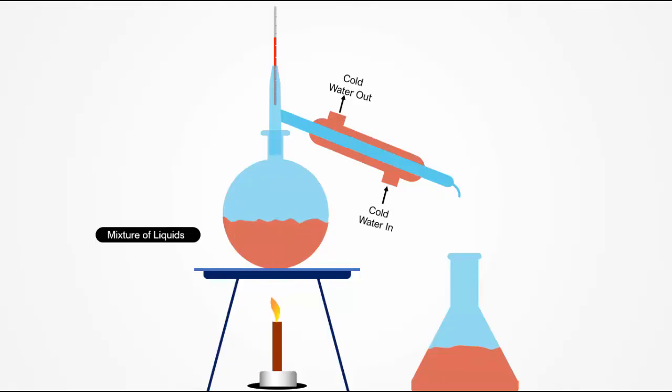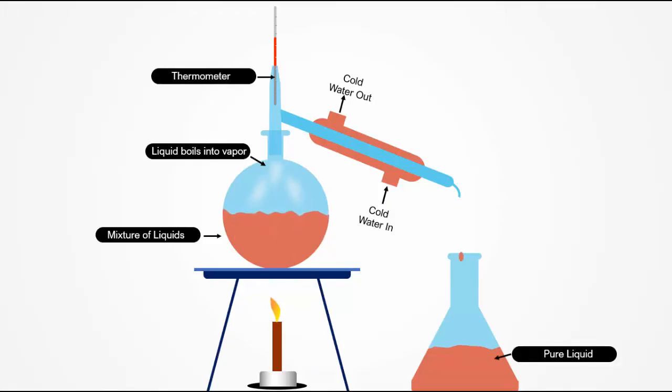You can see here the water turns into vapor and it goes up. The water vapor is routed through the condensing coil where it reverts back to liquid form, while the undesirable elements stay in the boiling tank.